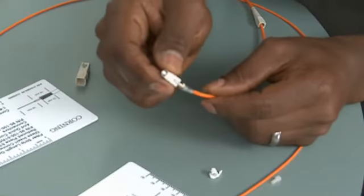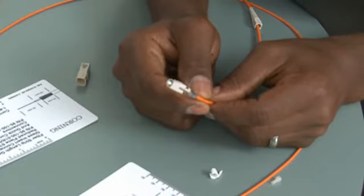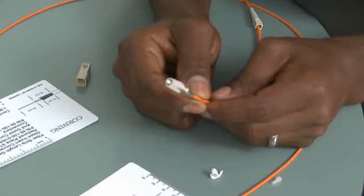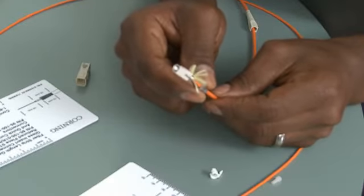I've trimmed my fiber. For details on how to do that, please review our video on installing anaerobic connectors on 900 micron coated fibers. The video also details how to polish after installing the crimping bands.